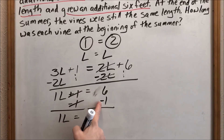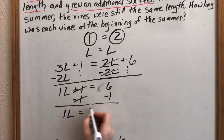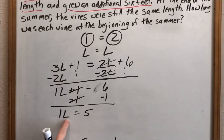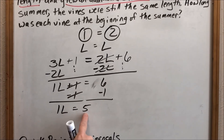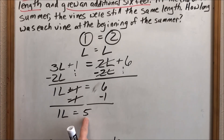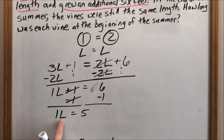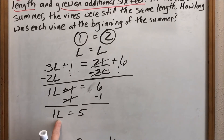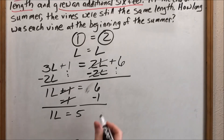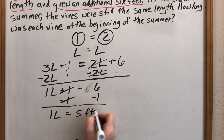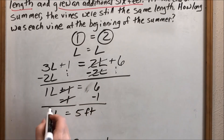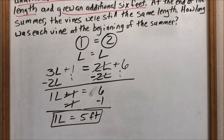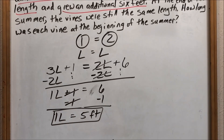Positive 6 minus 1 — you have 6, you give away 1, you have 5. So L equals 5. What does that represent? This is a word problem, so it's really important to state what the number represents. Our L represented how long the vines were. The problem uses feet, so the vines were 5 feet long. Both of them were 5 feet at the beginning of summer.